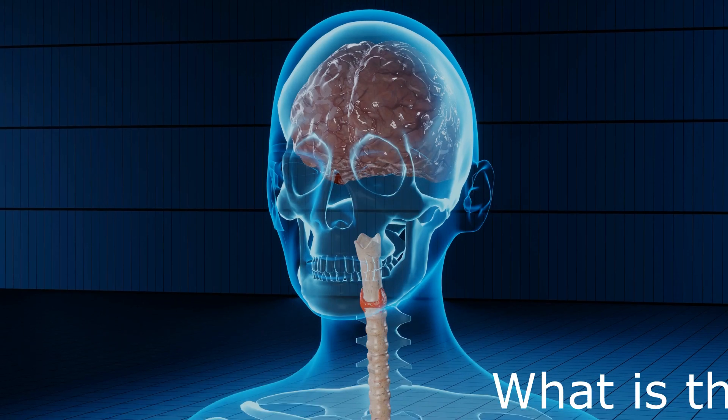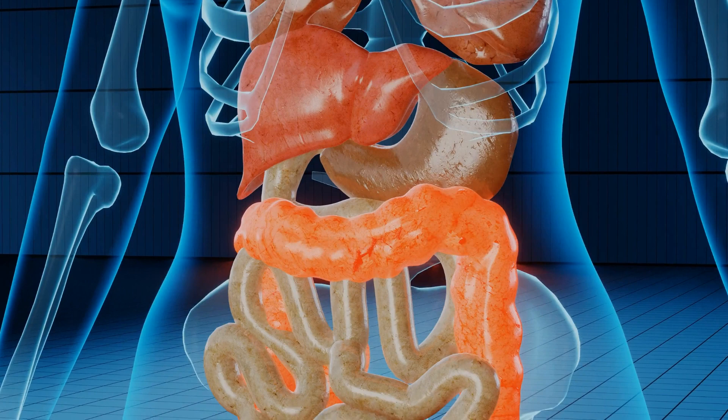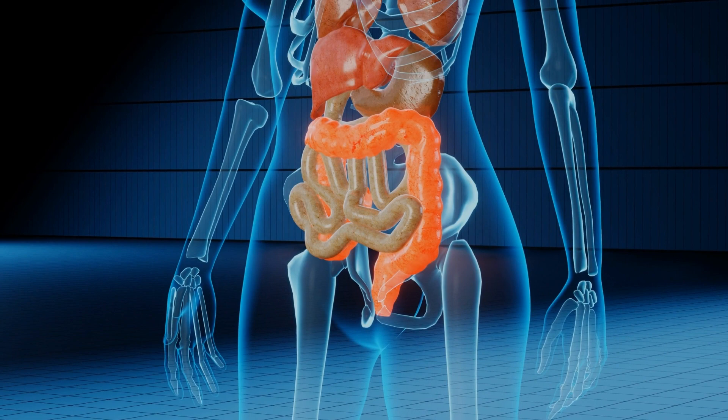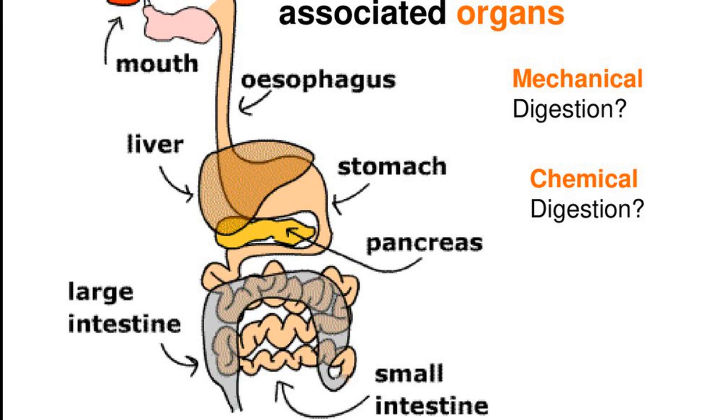What is the digestive system? Digestion is a process which breaks down complex food into simple soluble substances so that they can be easily absorbed by the blood. For complete digestion of food, the food has to travel through a 9 meter long canal from the mouth to the rectum. This canal is called the alimentary canal.